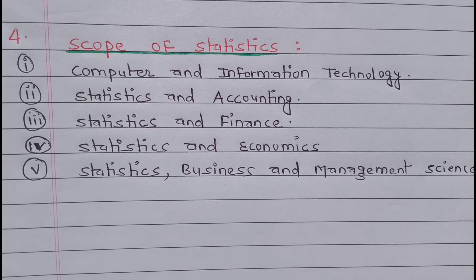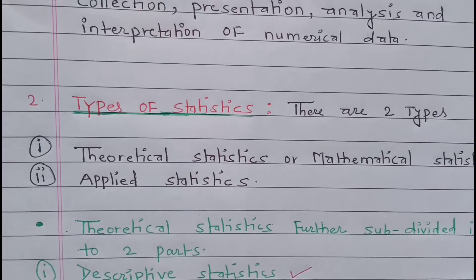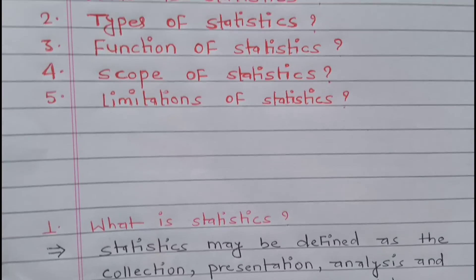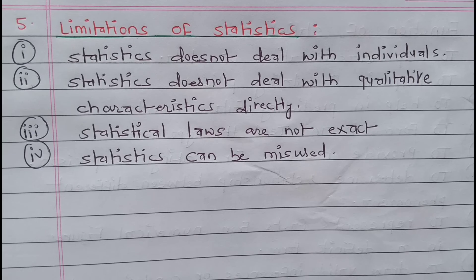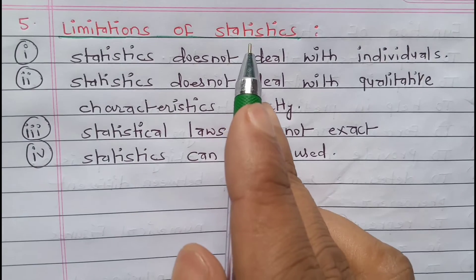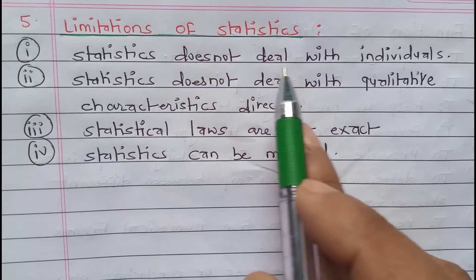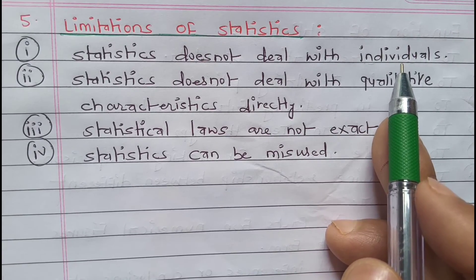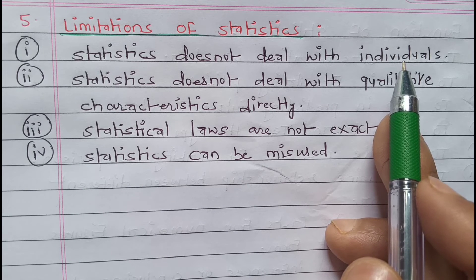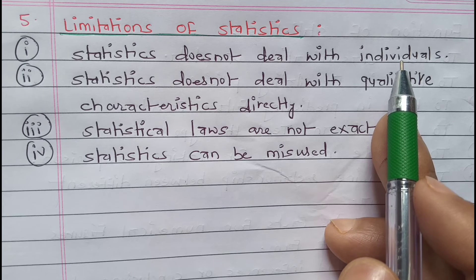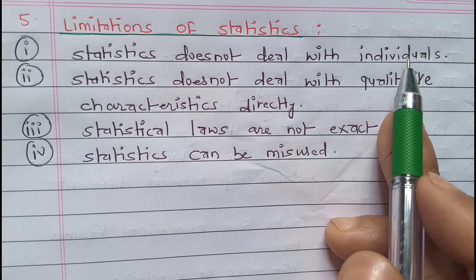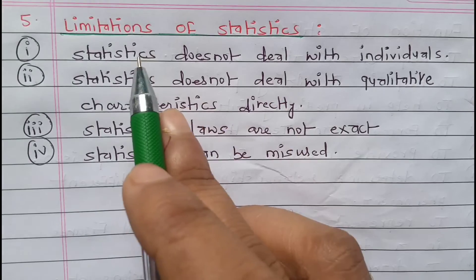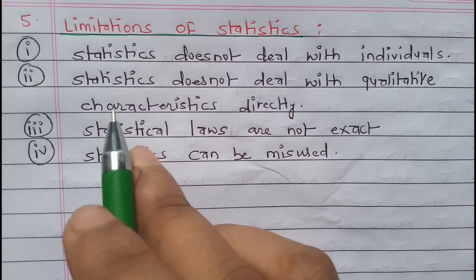Now the last point is the limitation of statistics. The first limitation is that statistics does not deal with individuals. That means if a number is individual — for example, just the number 39 alone — statistics does not deal with it. But if it is a series like 1, 2, 3, 4, 5, that is a group and statistics will deal with it.